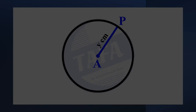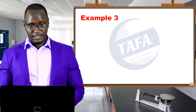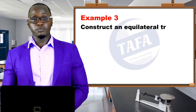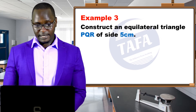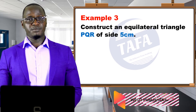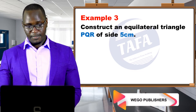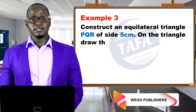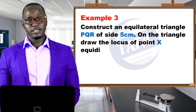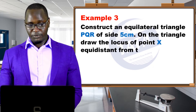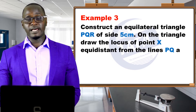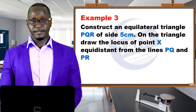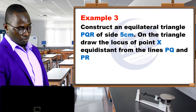Example three: construct any equilateral triangle PQR of side five centimeters. On the triangle, draw the locus of points X equidistant from the lines PQ and PR.